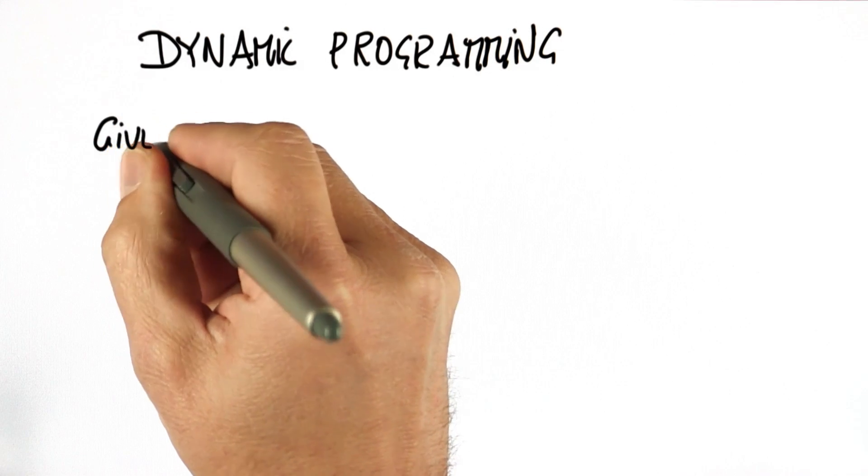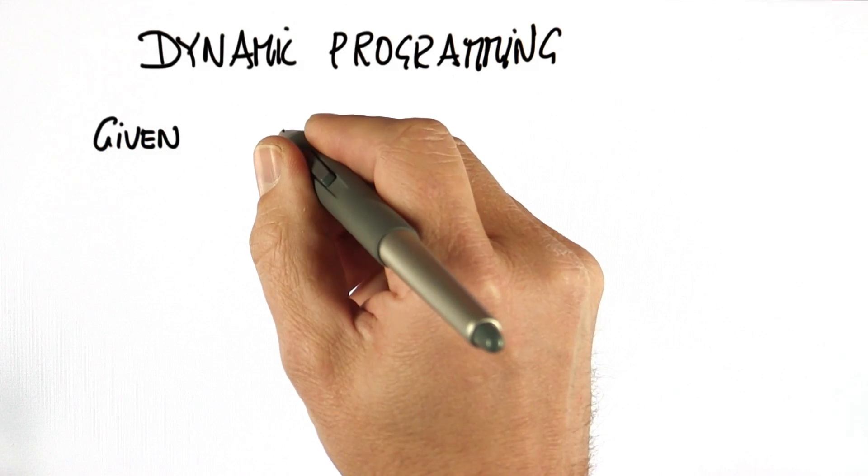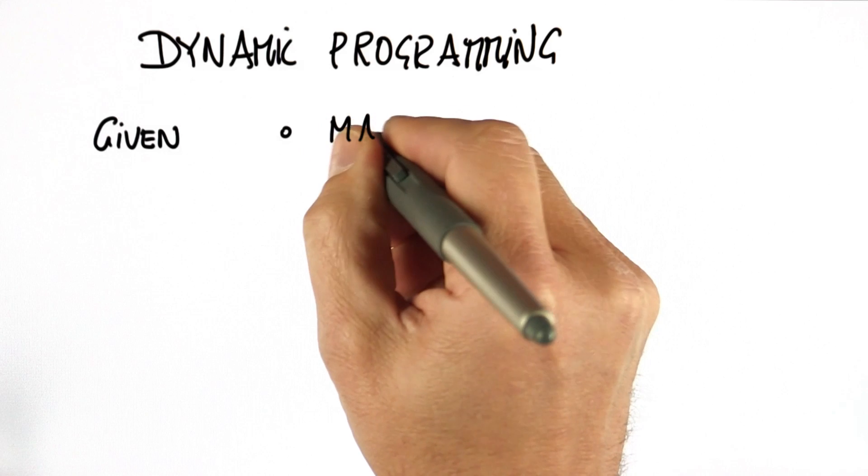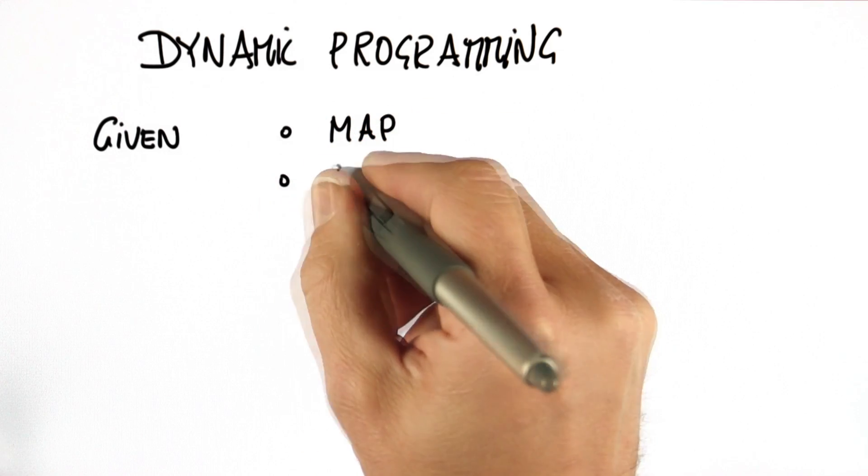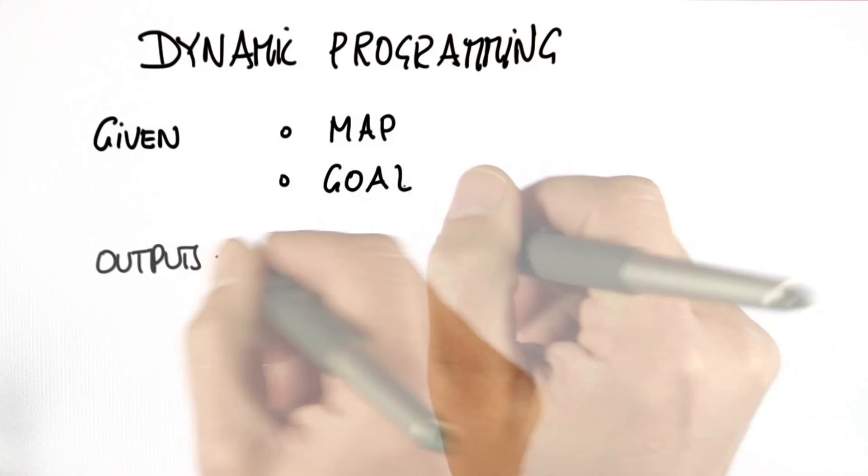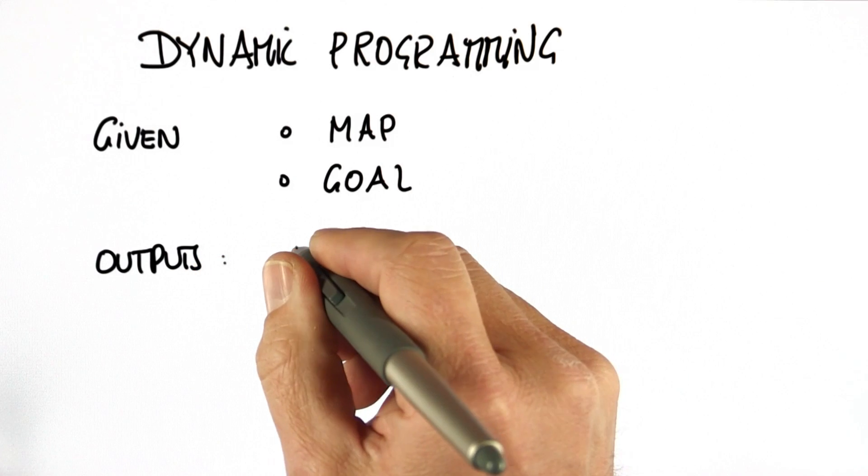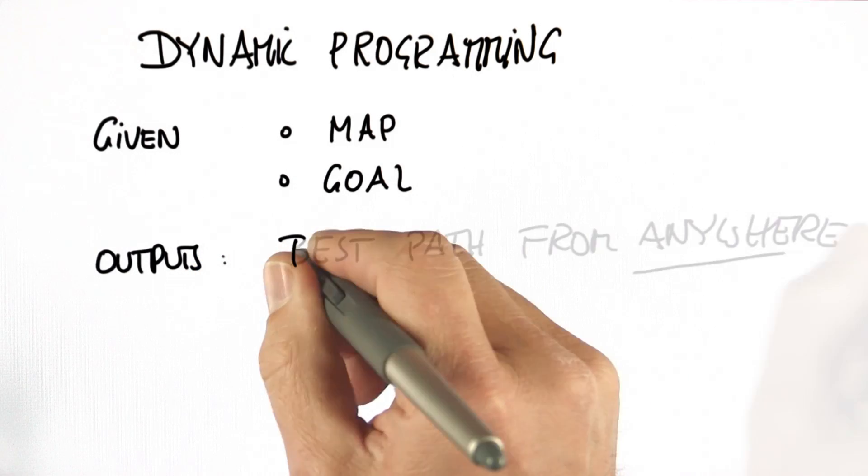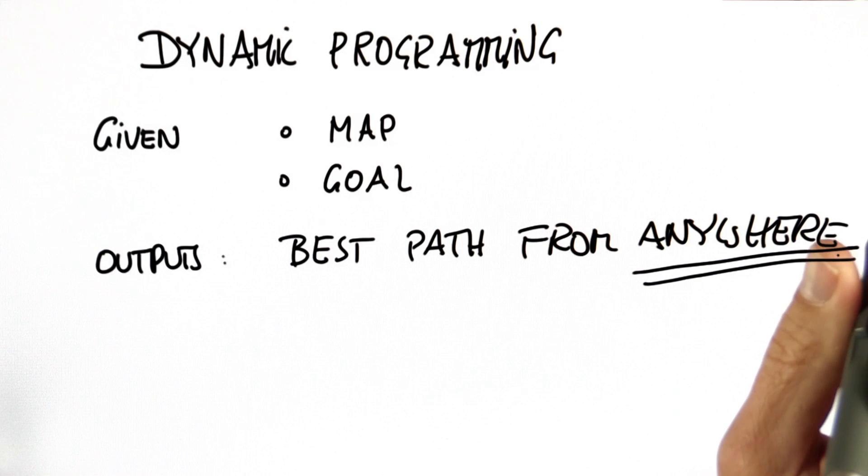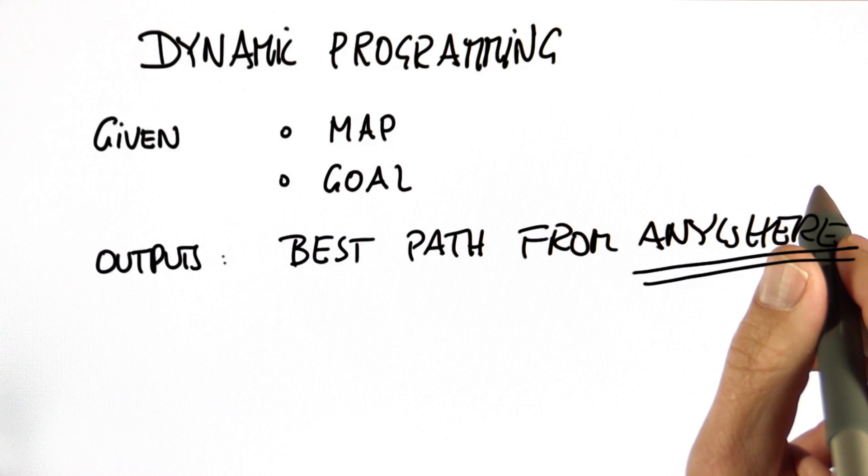Just like A star, it's going to find your shortest path. You give it a map of the environment as in A star, one or more goal positions. What it outputs is the best path from any possible starting location. So this planning technique is not just limited to a single start location, but to any start location.